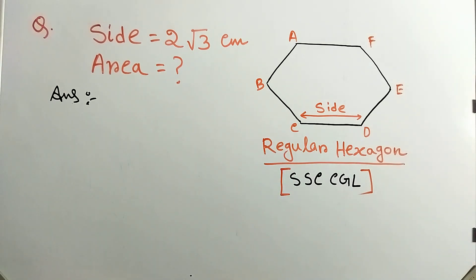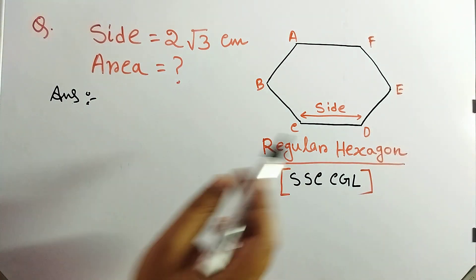This is the regular hexagon, the side is 2 root 3 cm. So all the 6 sides are same for regular hexagon.